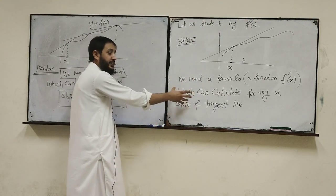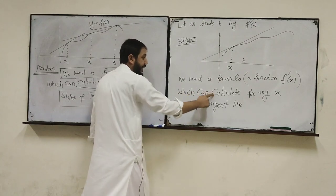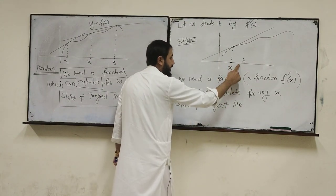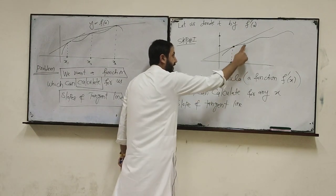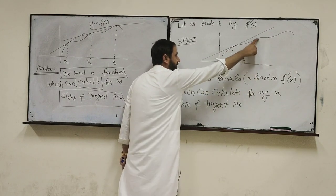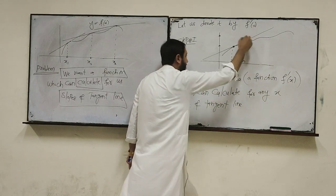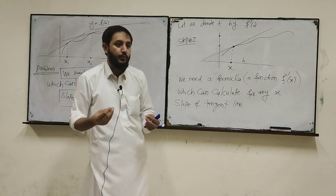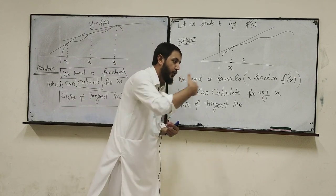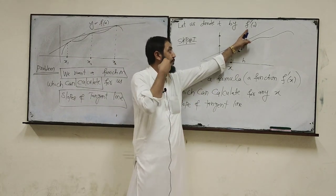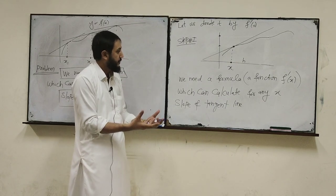I am repeating these words again: we need a function, we need a formula — a function f prime of x which can calculate for us. For any x we plug in, it will return the slope of the tangent line at that point. یہ پورا agenda میں نے آپ کو بتا دیا. ہمیں ایک ایسے function کی ضرورت ہے، ایک ایسے slope machine کی ضرورت ہے.